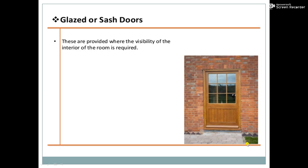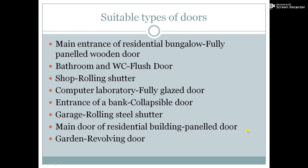The next type is the glazed or sash door. These are provided where the visibility of the interior of the room is required. Now we have seen the seven types of doors. For the main entrance of a residential bungalow, we use a fully panelled wooden door.